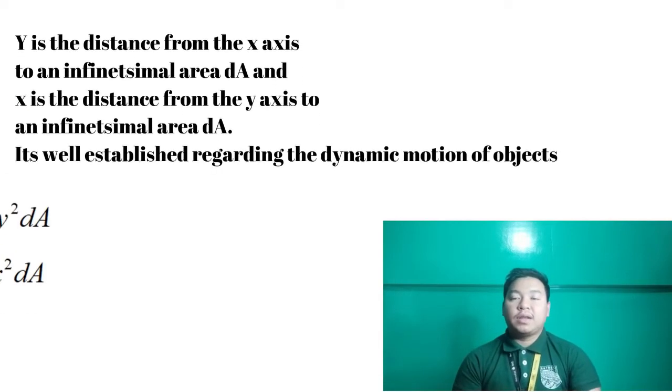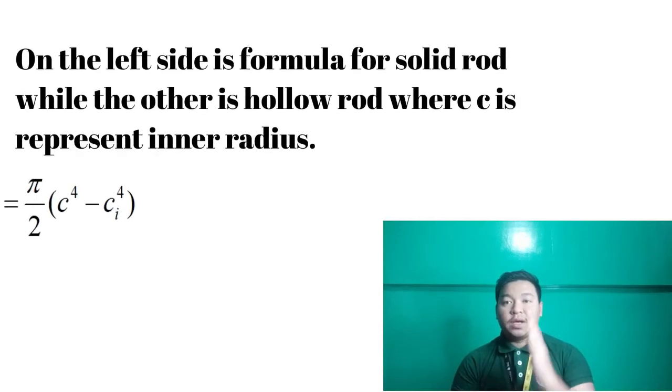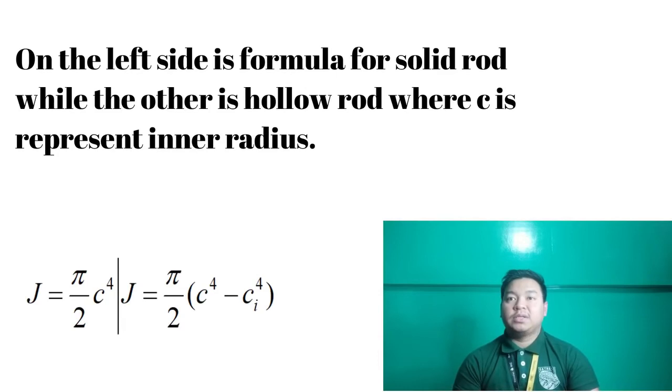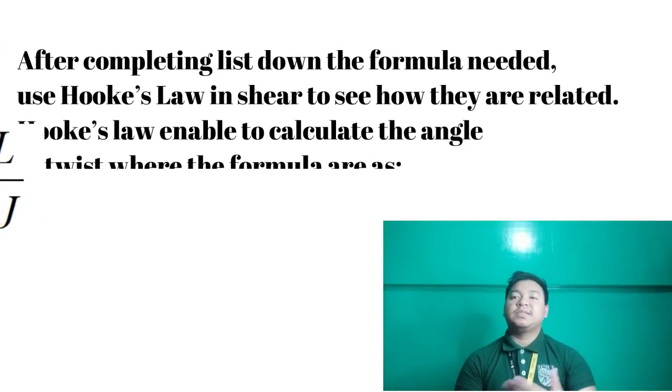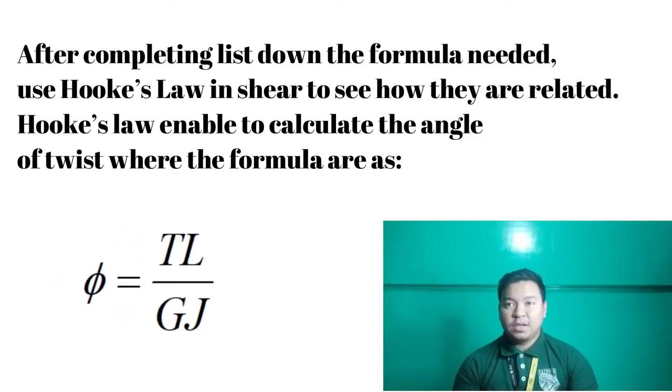The larger the moment of inertia, the less the beam bent, where it can be followed by this mathematical equation. Here you can see that I_X and I_Y, where Y is the distance from the X axis infinitesimal area dA, and X is the distance from Y axis to the infinitesimal area dA. It is well established regarding the dynamics motion of the objects. Here are the simple form of circular cross section. We are given it into 2, which is hollow and solid. In solid, we have J equals to pi over 2 and C4. On the left side is the formula for solid rod, while on the other is hollow rod where C is represented inner radius. After completing list down all the formula needed, we use the Hooke's law in the shear to see how they are related.